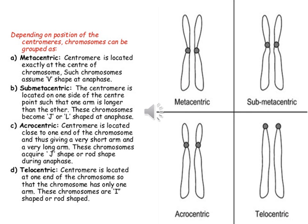The centromere is like a little ball in the middle of the chromosome and separates it into the P and Q arms. It is important during cell division and helps ensure the chromosomes don't lose their sister chromatids. It is not always right in the middle. When the centromere is located exactly at the center, we call it metacentric. Submetacentric means the centromere is on one side of the center, giving one longer and one shorter arm. In acrocentric, the centromere is located close to one end, giving a very short and a very long arm. Telocentric is a chromosome where the centromere is at one end, so the chromosome has only one arm.